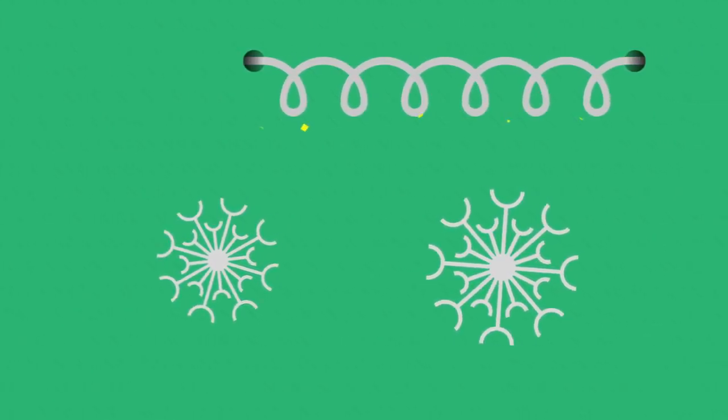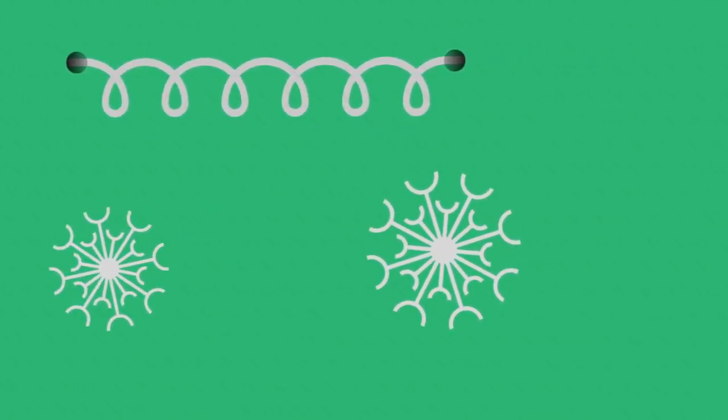So dust particles are given an electrical charge. Now all the dust is pulled from the airstream by an opposite charge.